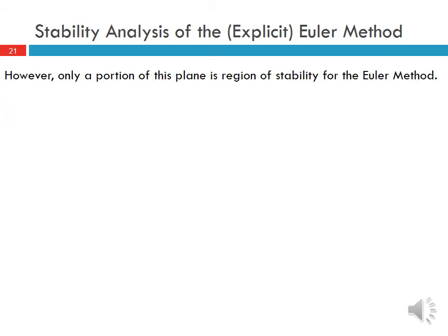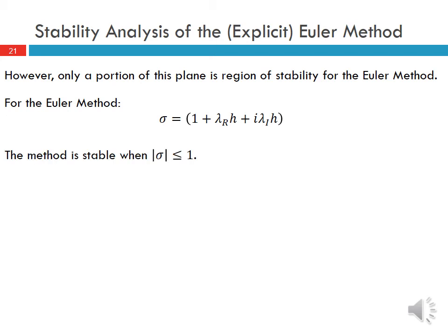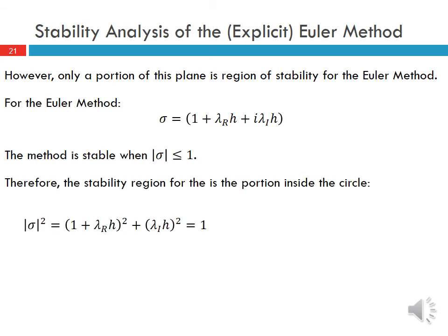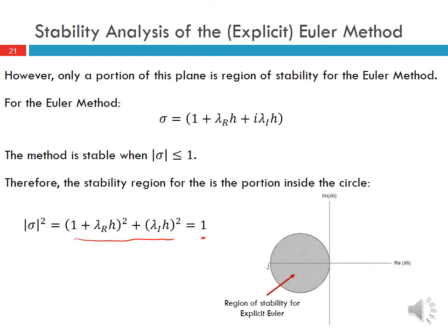However, when considering a particular numerical method, we want to know its stability region applied to the model problem. Only a portion of this plane is the stability region for the Euler method. For the Euler method, σ = 1 + λᵣh + i·λᵢh, and the method is stable when |σ| < 1. Taking |σ|² and requiring it to be ≤ 1 gives a circle, which defines the stability region for the explicit Euler method.